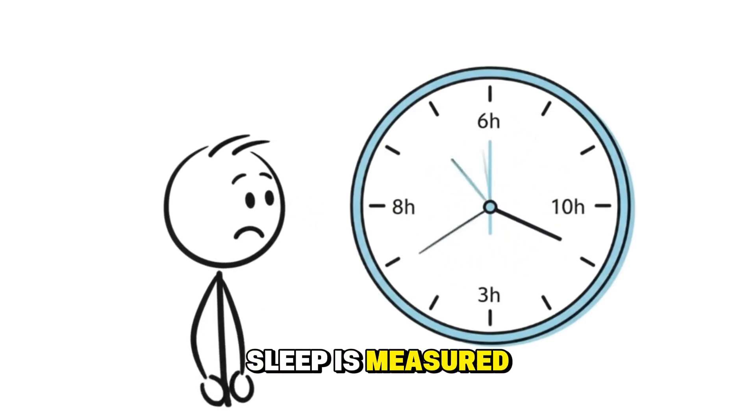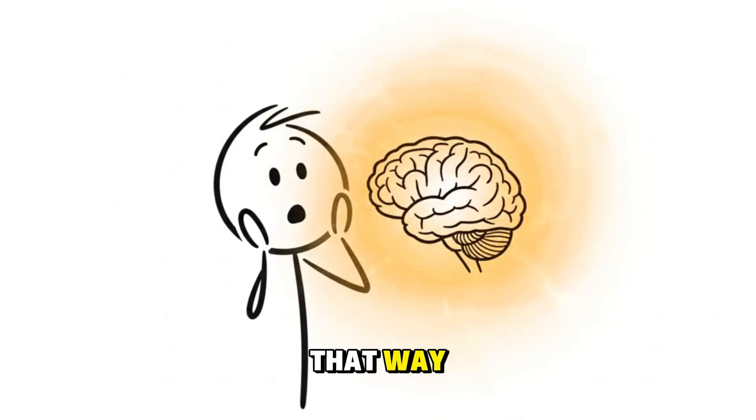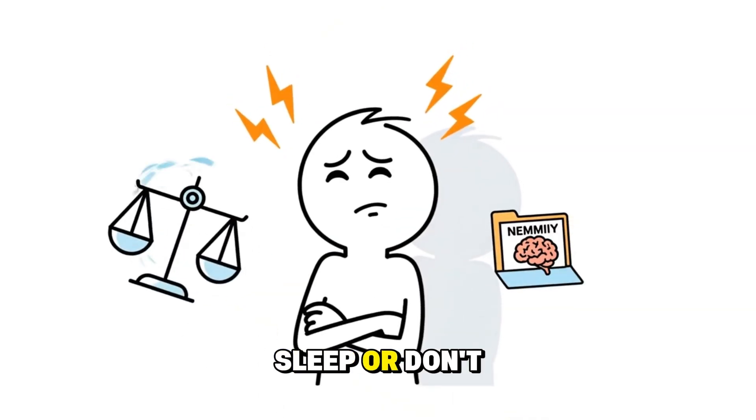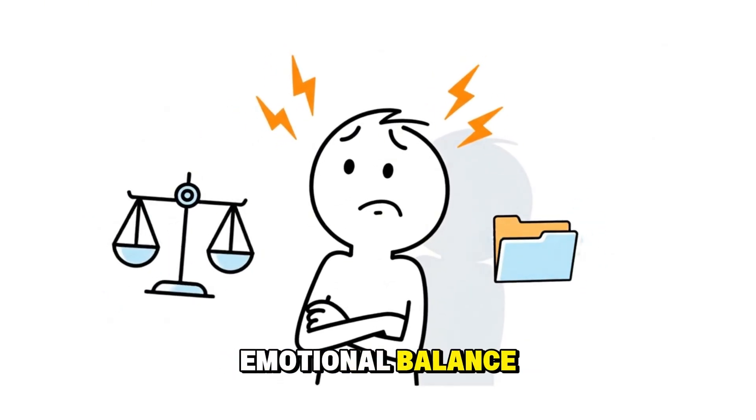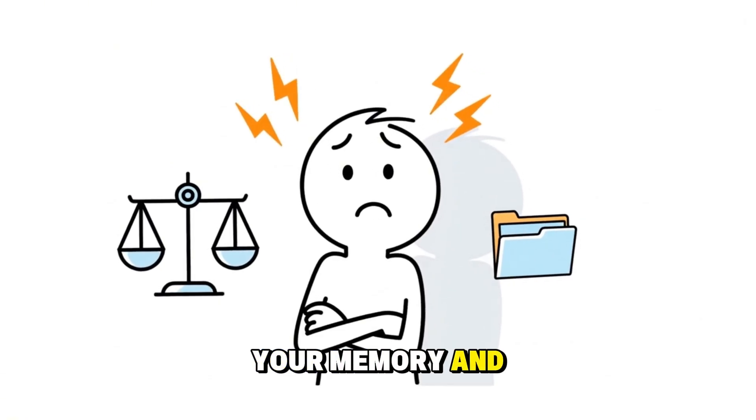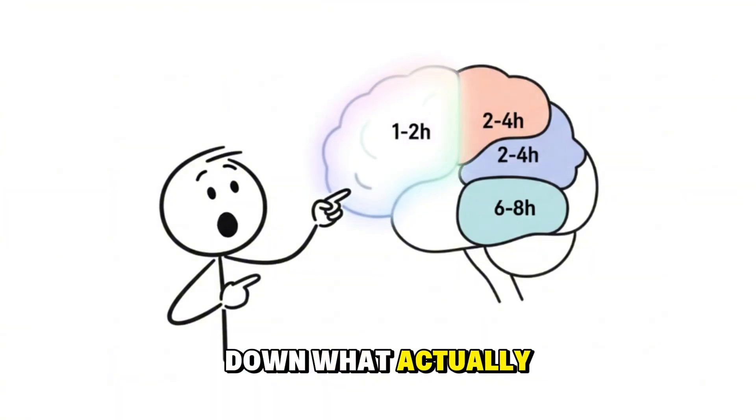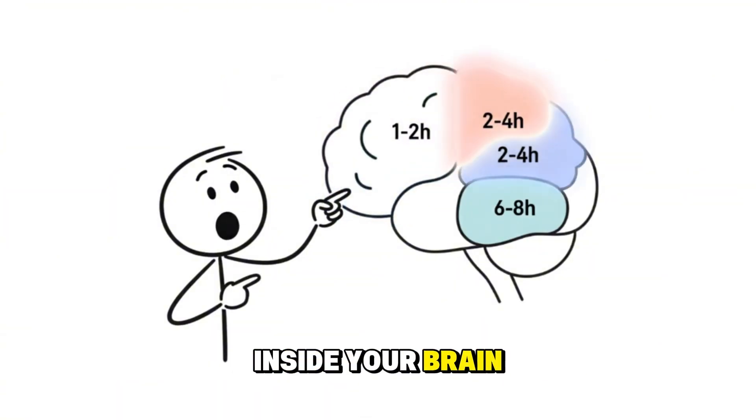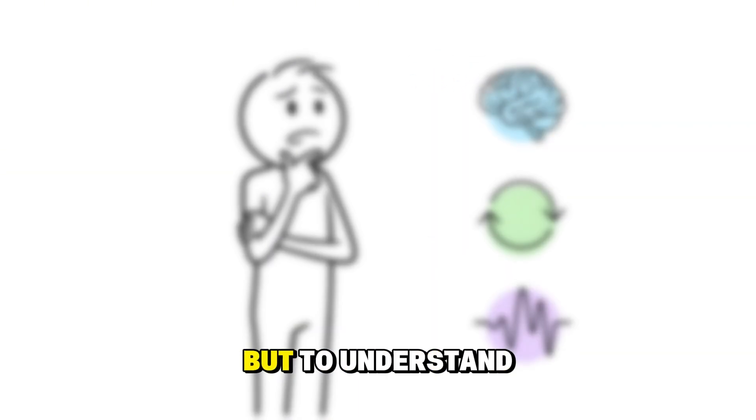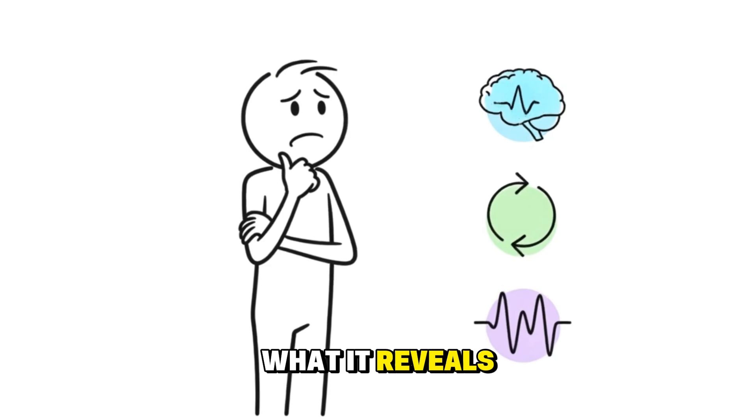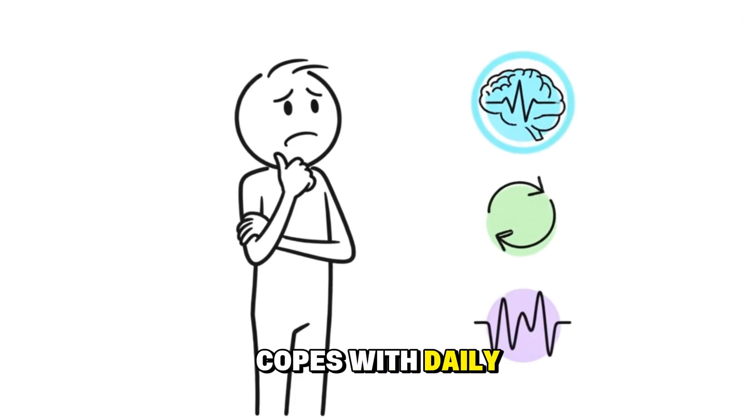Most people think sleep is measured in hours, but your brain doesn't see it that way. Every hour you sleep or don't sleep quietly changes your emotional balance, your stress levels, your memory, and the way you show up in the world. This video breaks down what actually happens inside your brain at each sleep duration. Not to judge your sleep schedule, but to understand what it reveals about your mind, your habits, and the way your nervous system copes with daily life.